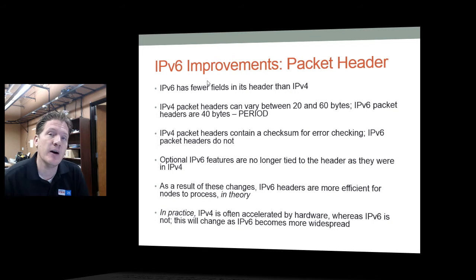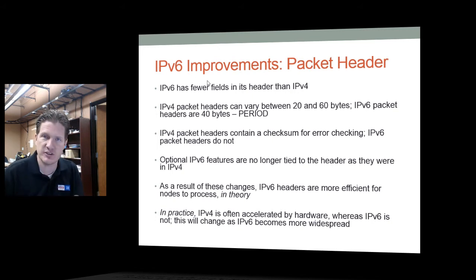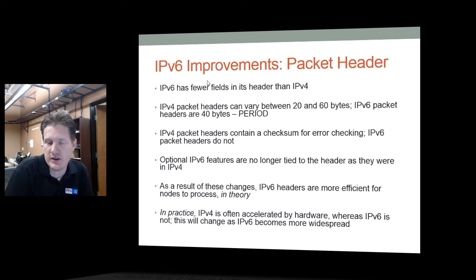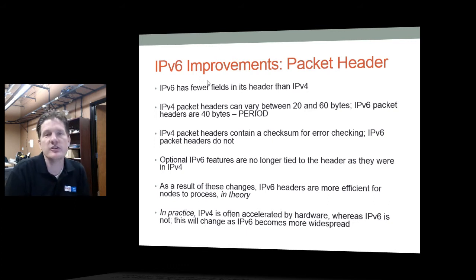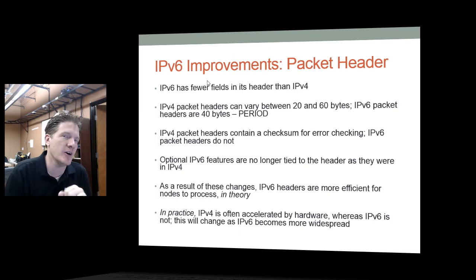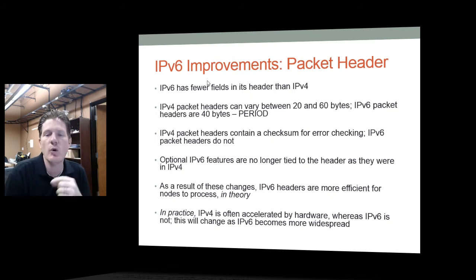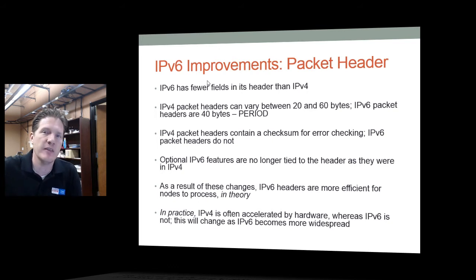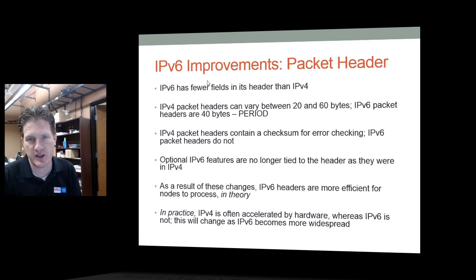However, one disadvantage with IPv6 rolling out is that most hardware — switches, routers, and even computers — were designed to optimize IPv4. Until hardware manufacturers design equipment that is also optimized for IPv6, you won't see the improvement in overhead and efficiency that we would normally get with a more efficient header. We have to wait for hardware vendors to catch up.